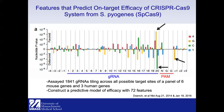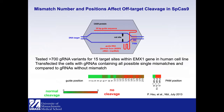Dr. Doench's lab assayed about 1800 guide RNAs across all possible target sites of nine genes and constructed a model of efficacy using 72 features including GC content and mono- or dinucleotide frequency. This figure depicts how single nucleotide variants affect efficacy — for example, at position 20, G is highly favored and C is highly disfavored.